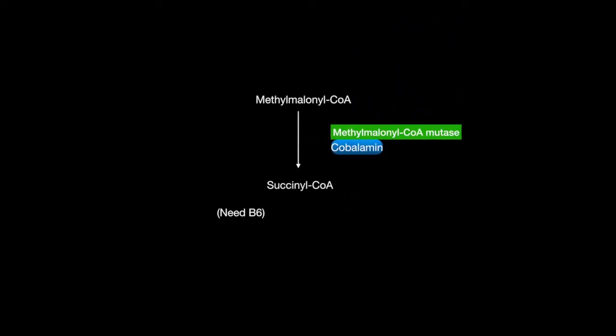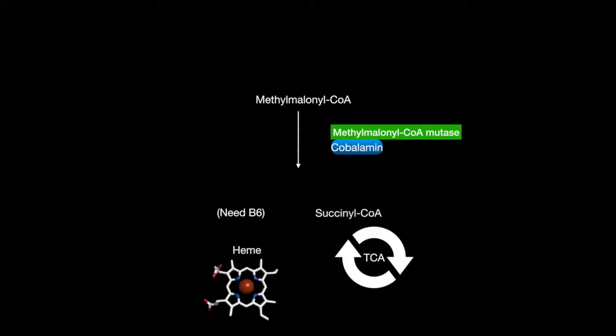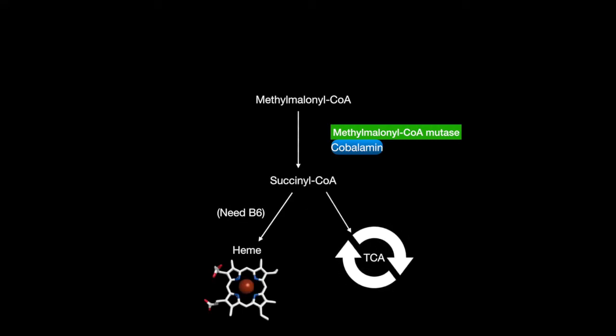Methylmalonyl-CoA mutase will turn methylmalonyl-CoA into succinyl-CoA, which is used to make heme via vitamin B6, or enter the TCA cycle. Fatty acids with an odd number of carbons and branched-chain amino acids are the source of methylmalonyl-CoA.